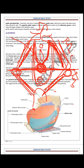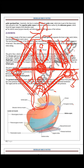The posterior part of levator ani is the iliococcygeus muscle. After inserting into the median raphe and perineal body, the three separate fiber groups are: anteriorly the sphincter vaginae or levator prostatae, in the middle the puborectalis forming the anorectal ring, and posteriorly the iliococcygeus. The coccygeus muscle originates from the sacrospinous ligament and inserts into the coccyx.